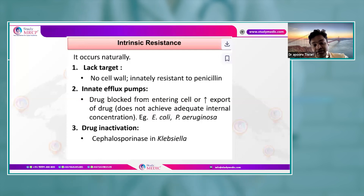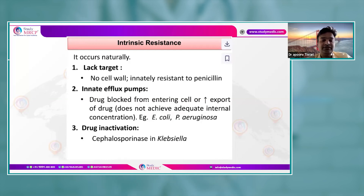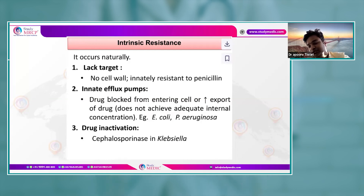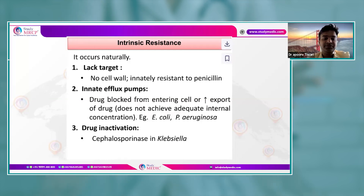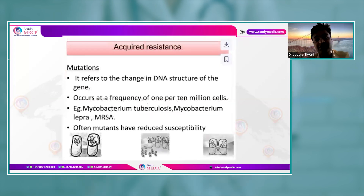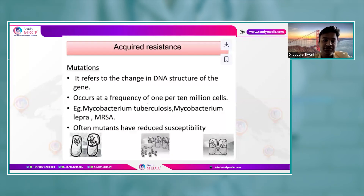Efflux pumps are another mechanism: drugs are blocked from entering the cell, or their export out of the bacterium is increased, so adequate internal concentration is not achieved. This kind of resistance is seen in E. coli, Pseudomonas aeruginosa, Klebsiella, Proteus, and Ureaplasma urealyticum — commonly called coliforms. Drugs can also be inactivated by enzymes like cephalosporinase.